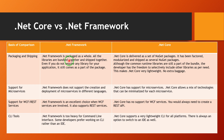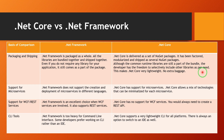On packaging and shipping, dotnet framework is packaged as a whole — all the libraries are bundled together and shipped together, even if you do not require a particular library. In case of dotnet core, it is modularized and shipped as several NuGet packages. Although the common runtime libraries are still part of the bundle, the developer has the freedom to selectively include other libraries as per need. This makes dotnet core very lightweight.